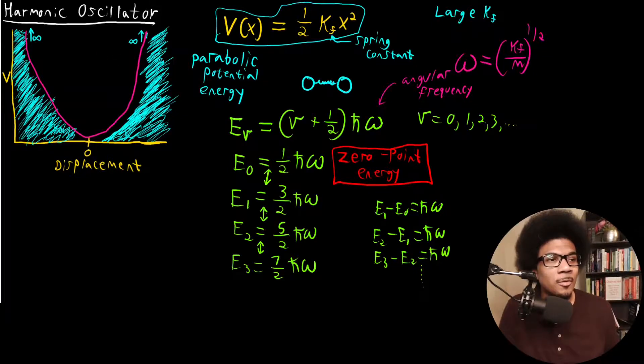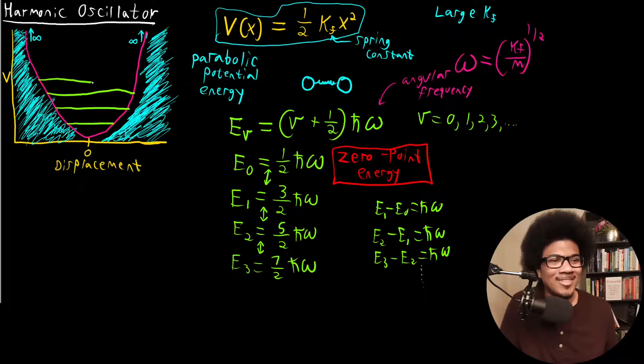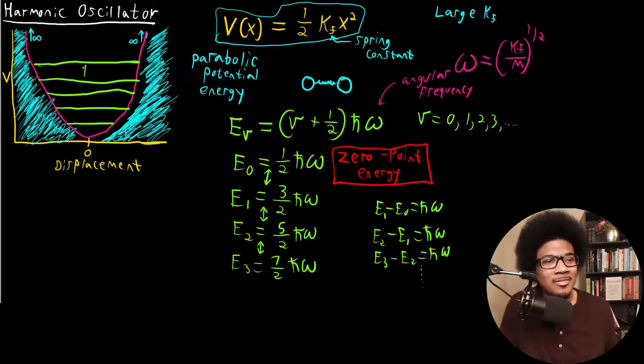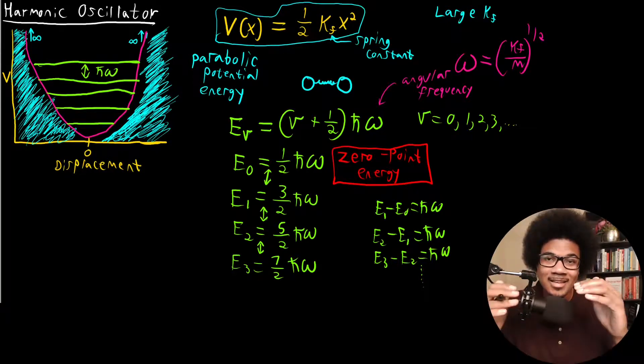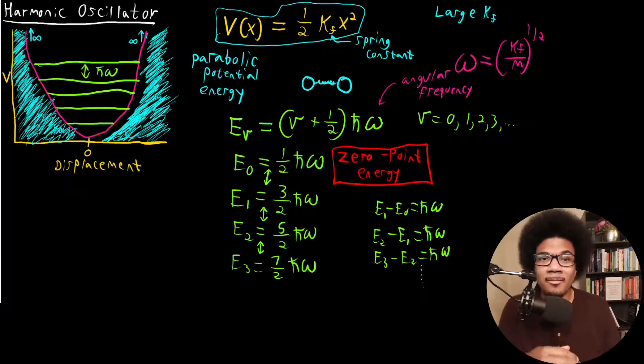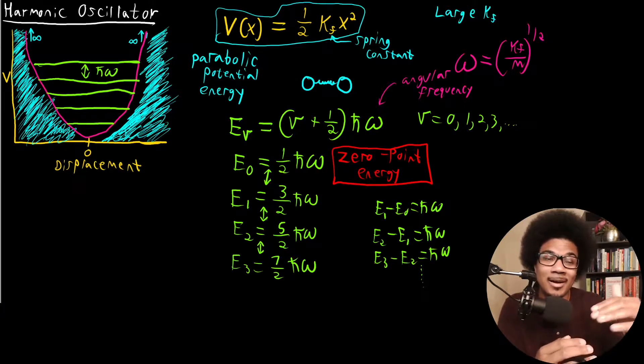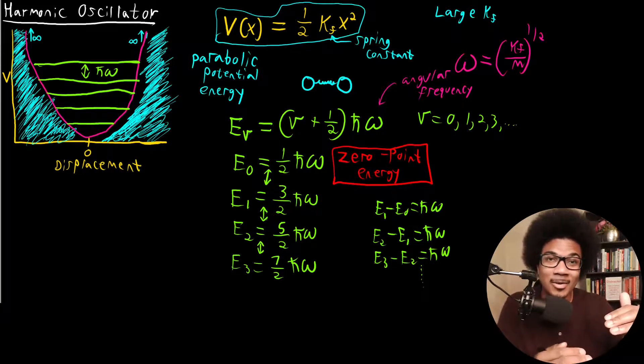So what that'll look like for us, if we were to superimpose these energy levels onto our diagram here, we will have our zero point energy down here at 1/2 ℏω. Then we will have the next one, and the next one. And I'm trying my hardest to have the same spacing between each one—failing, but you get the picture. So between each of these levels is a gap of ℏω. Consistent spacing between the energy levels, at least for the simple quantum harmonic oscillator. That means that energy excitations between adjacent levels should require the exact same energy.